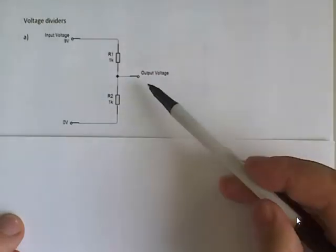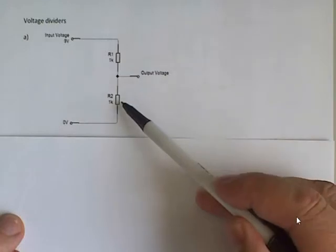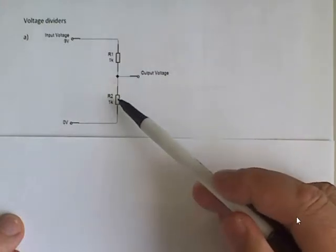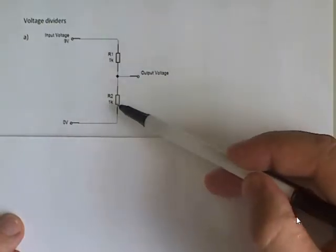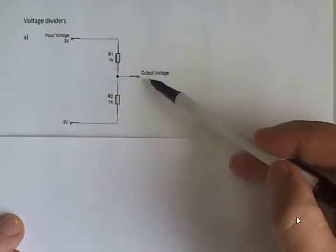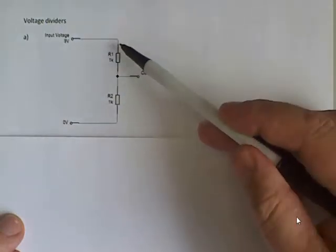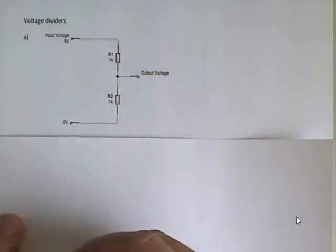Now intuitively I can look at this and say okay they're equal resistances, so this resistance is half of the total resistance, so this output will be half of the total input voltage. However I'll show how to use the voltage divider formula to calculate that.